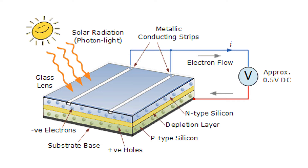In this solar panel, the n-type layer is on one side and the p-type on the other, with the depletion layer in between. The metallic conducting strips are connected to the electric circuit — making electrons flow is the main purpose of this arrangement.